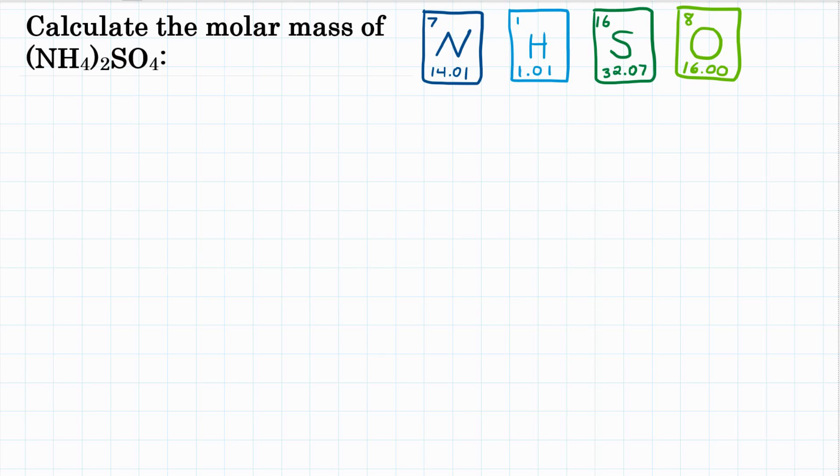Alright everybody, calculate the molar mass of (NH₄)₂SO₄, which is also known as ammonium sulfate. So we have four different elements in this compound: we have nitrogen, we have hydrogen,